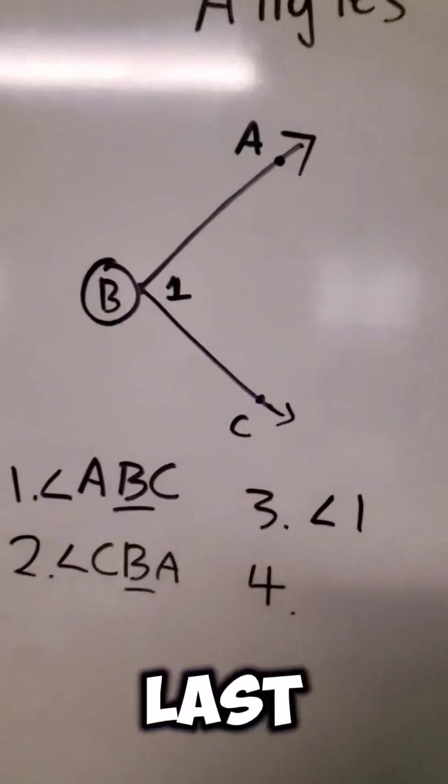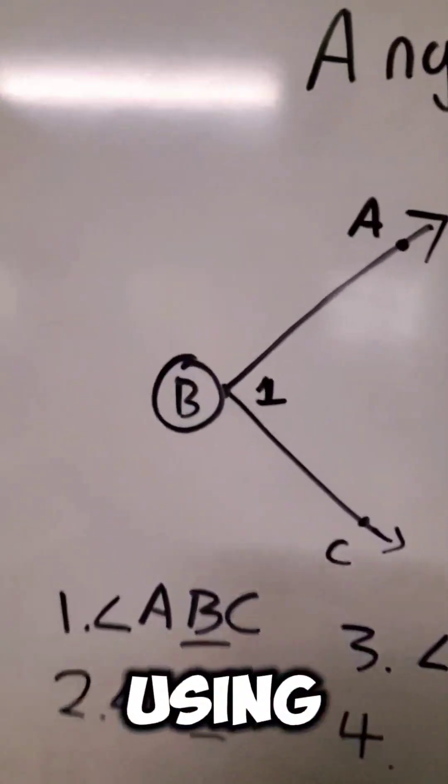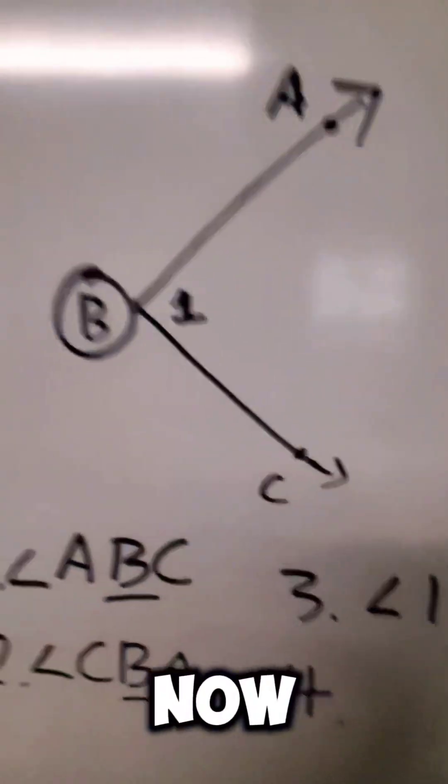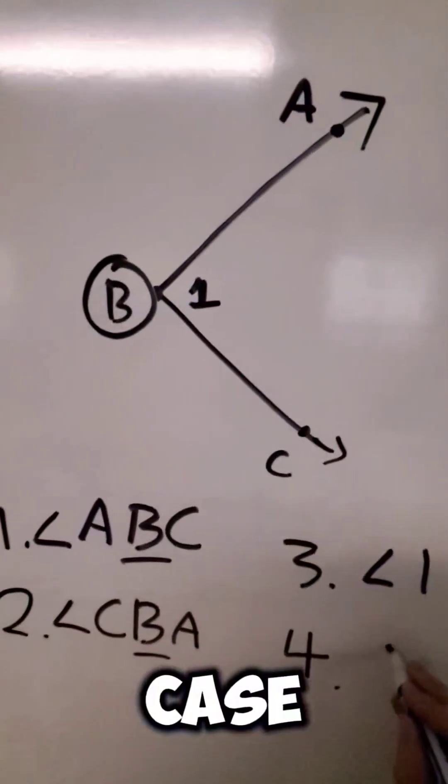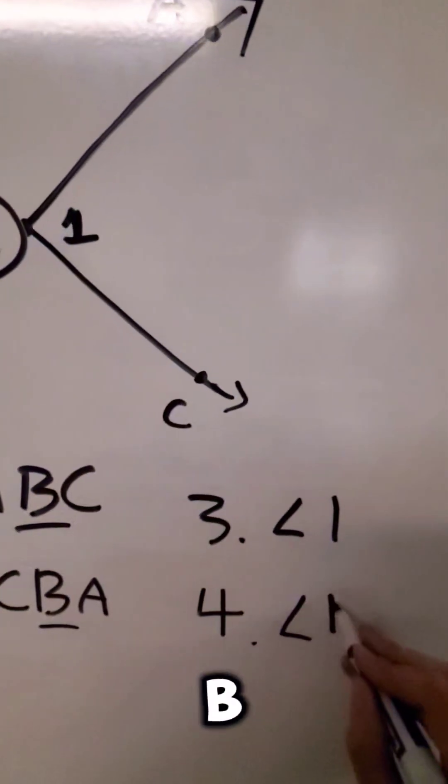And the last way we can name this angle is just by naming it using the vertex. Now we can do it in this case. We can name it angle B.